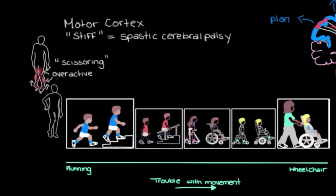Another pattern of distribution is stiffness in the arm and leg on just one side of the body. In this case, the person will often have the same gait problems like scissor walking and toe walking, but only on the affected side. In the upper body, some muscles become more active than others — specifically the muscles that bend the elbow, wrist, and fingers. These get really stiff and pull the arm and hand into flexed positions that are really difficult to move out of.